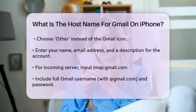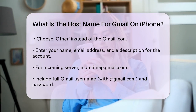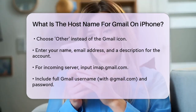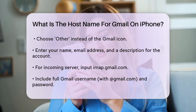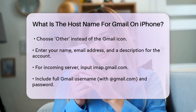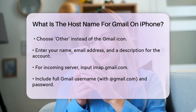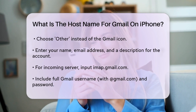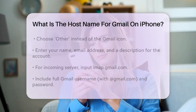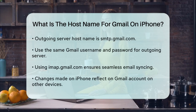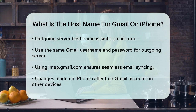For the outgoing server, you'll need to enter smtp.gmail.com as the host name, along with your Gmail username and password again. By using imap.gmail.com as your incoming server host name, you'll ensure that your emails are synced seamlessly between your iPhone and your Gmail account on any other device.